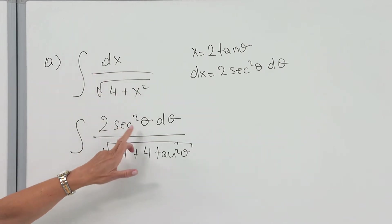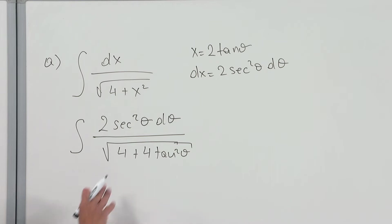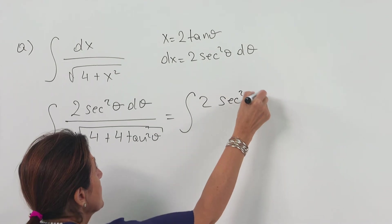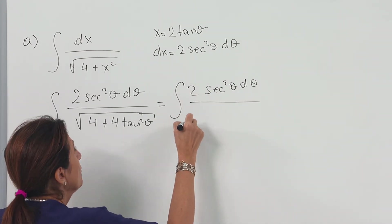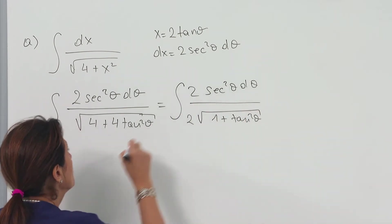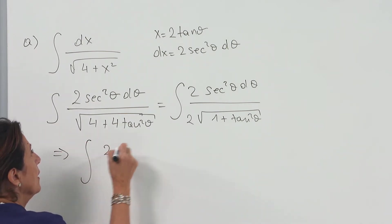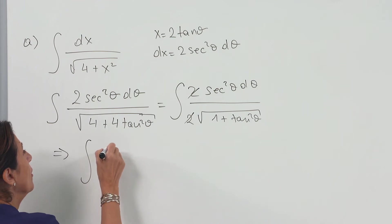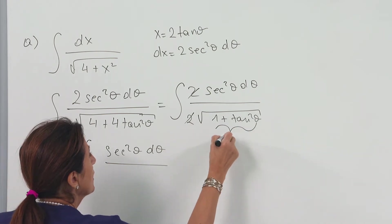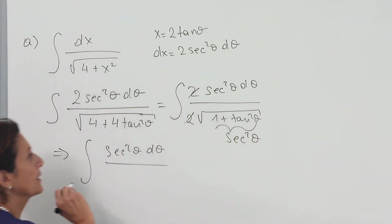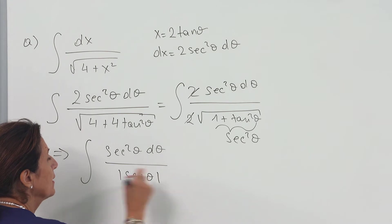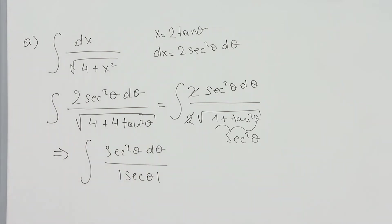I replace the terms. When you factorize 4, you end up with 2sec²θ dθ over the radical. I factorize and take out from the radical 1 + tan²θ, which equals sec²θ. You can simplify the 2s and you have sec²θ dθ over sec²θ.